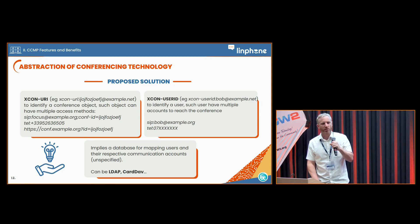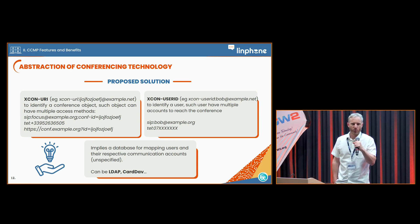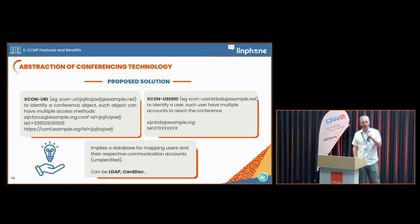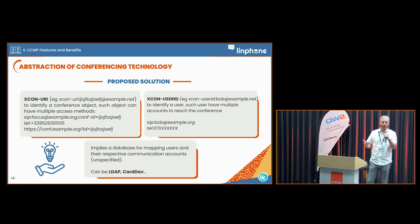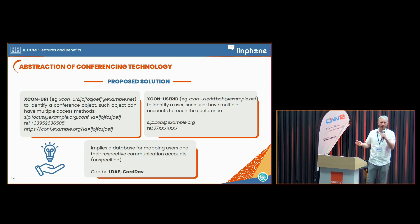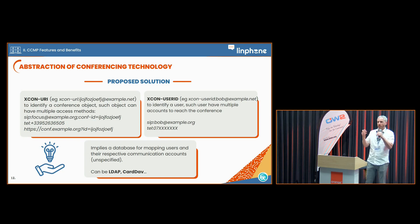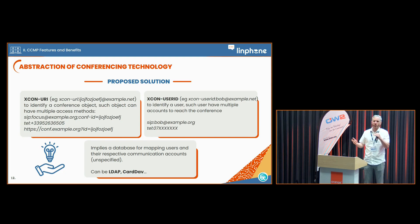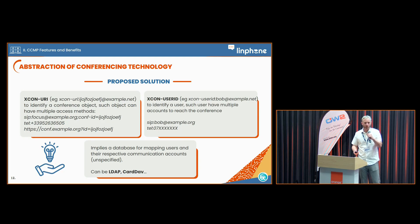Their proposed solution relies on two new URI schemes: one to refer to a conference object — this conference object URI is technology-agnostic, meaning people can later join using a SIP URI, a phone number, or an HTTPS link — and an XCON user ID scheme to refer to a user. A user can have multiple communication accounts for SIP, XMPP, or phone number, which implies there is a database to map users and their respective communication accounts, such as LDAP or CardDAV in a company.